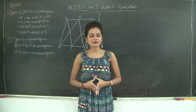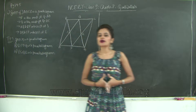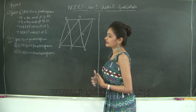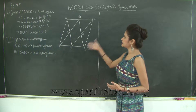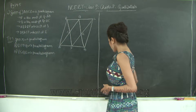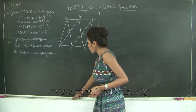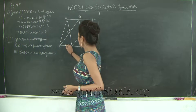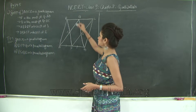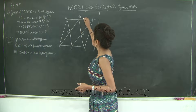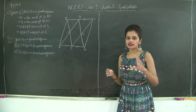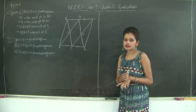Hello students, let us continue with Chapter 8, Quadrilaterals. We will take a look at the solved example on page 145. ABCD is a parallelogram in which P is the midpoint of AB, so AP equals PB. Q is the midpoint of CD, so QD equals QC. We need to prove that three of the quadrilaterals formed are parallelograms.